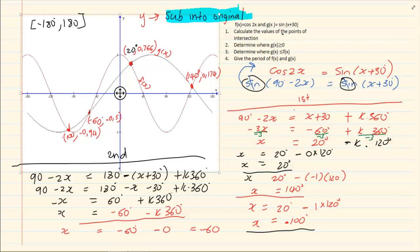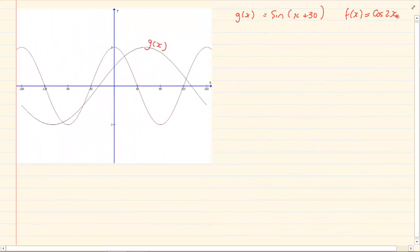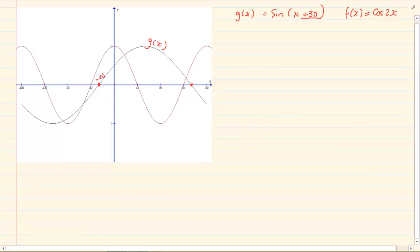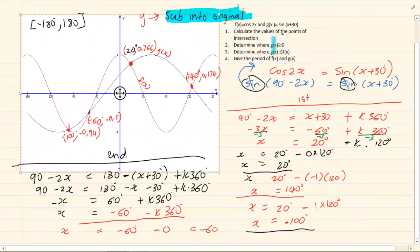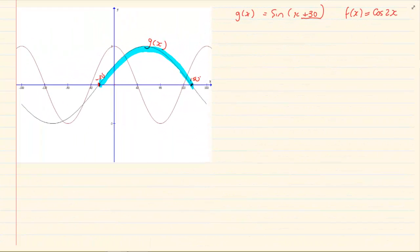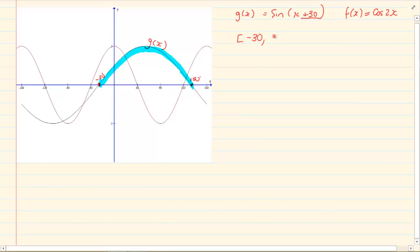The next question says determine where g(x), the sin graph, is greater than 0. They are intentionally testing whether you know the coordinates. Since it is sin(x + 30°), the original graph starts at (0, 0) but it has moved 30 degrees, so it starts at −30°. The original graph cuts at 180° but it has moved 30 degrees, so it now cuts at 150°. Where is g(x) greater than 0? It is from −30° to 150°. The question has a greater than or equal to sign, so the answer uses square brackets.